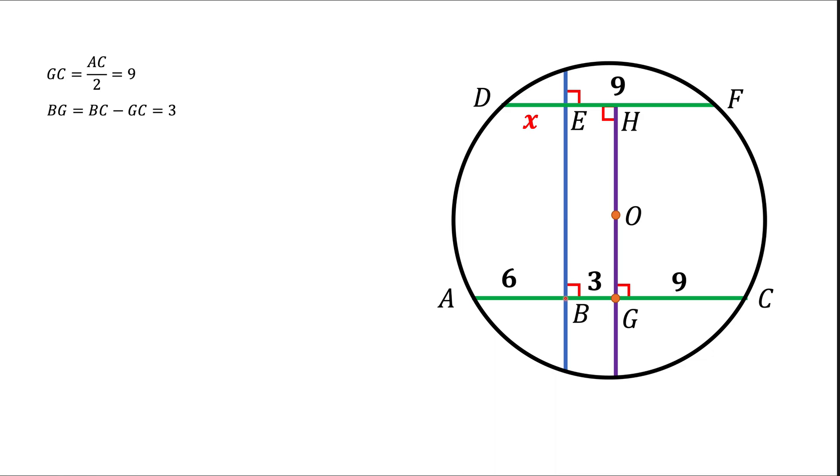The next thing we're going to look at is quadrilateral BEHG that has all angles of 90 degrees, which means this quadrilateral is actually a rectangle. In a rectangle, opposite sides have the same length. Since BG is 3, EH also has to be 3.